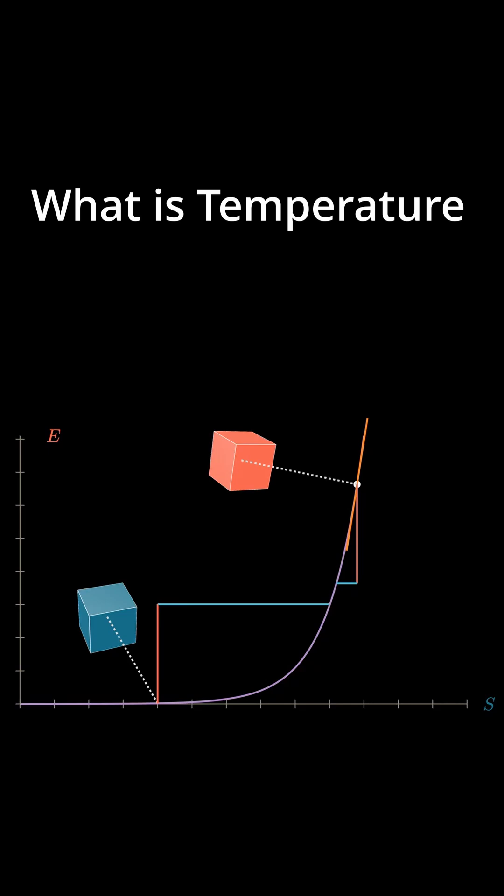So the total entropy of the system has increased. Which also means that the total amount of available microstates of the full system has increased.